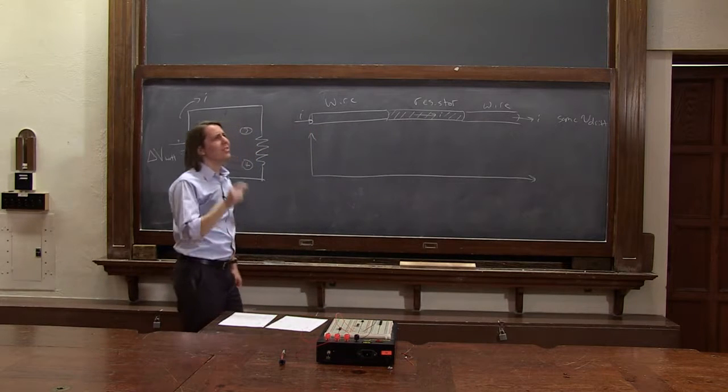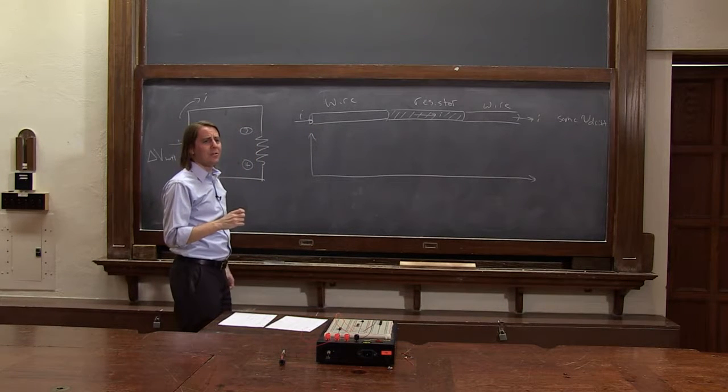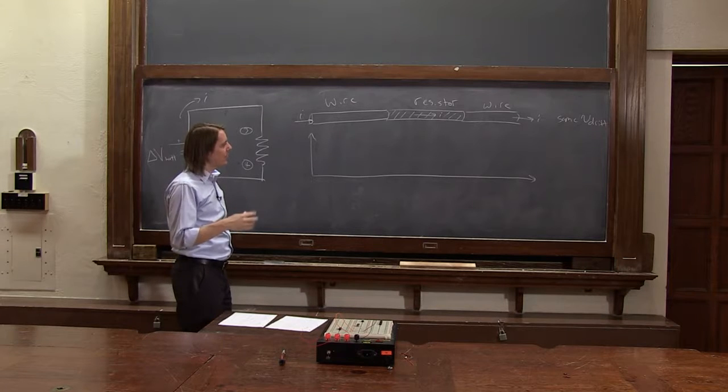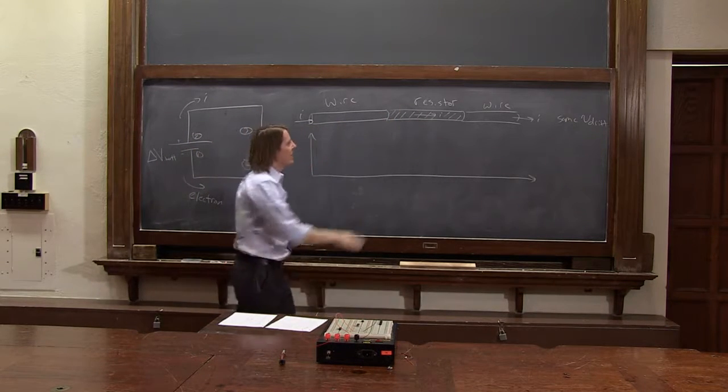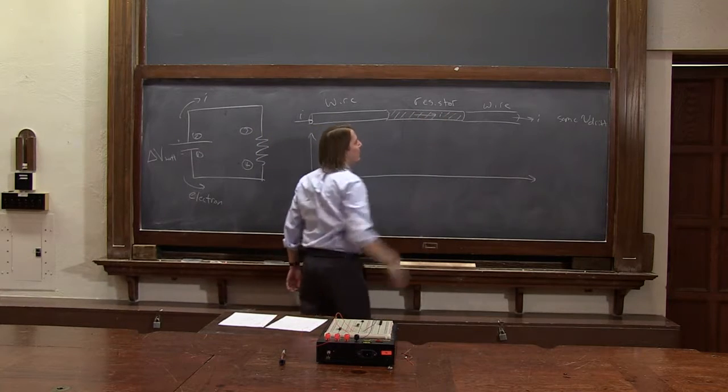Because remember, V-drift was the volume density of carriers times their charge times the area times V-drift. And all those things are the same. It's just a similar cross-section. It's just that here, inherently, something is different to make it a resistor.